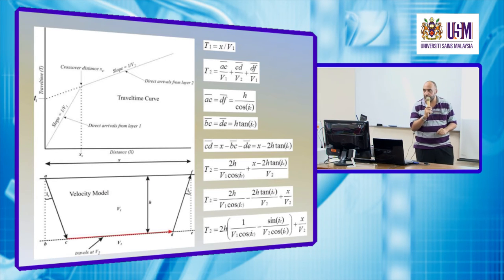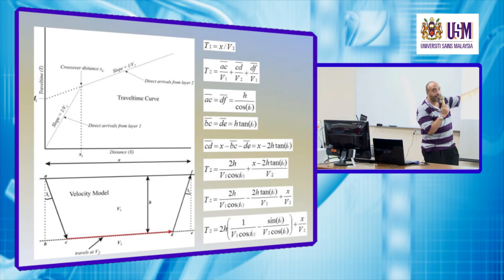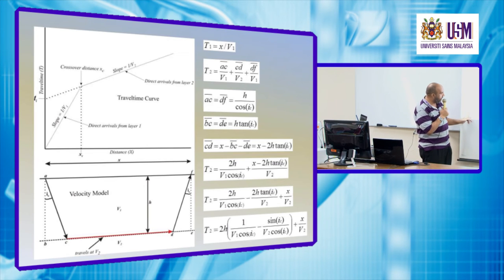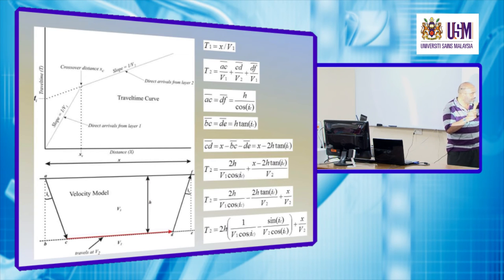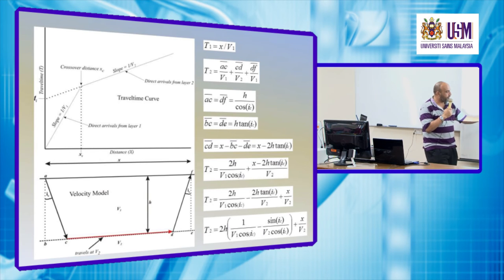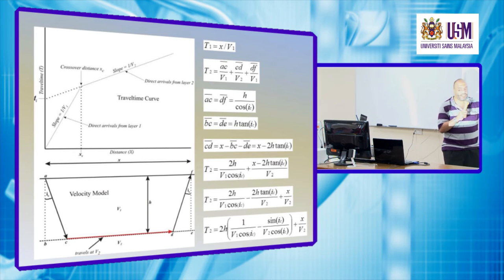In order to determine CD, we use our knowledge of the distance AF, which is X — the distance between the source and the geophone. The X distance at the interface goes from B to E, and we want only from C to D, so we must subtract BC and DE from X. From the congruence of the triangles, BC equals DE.